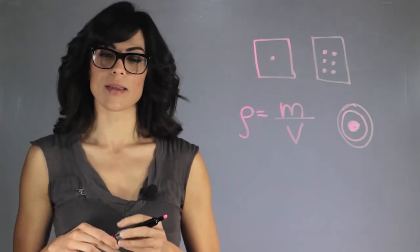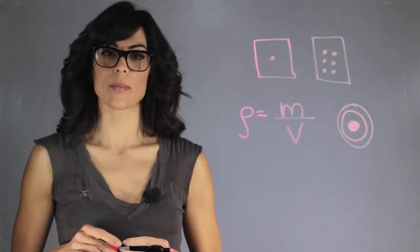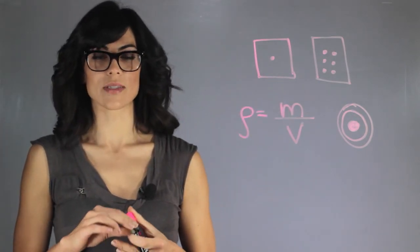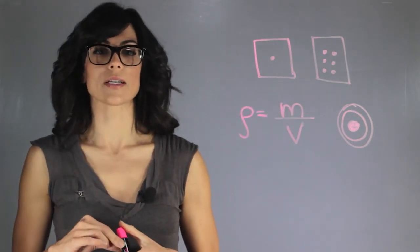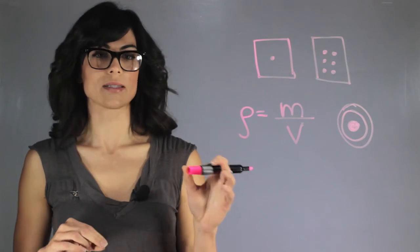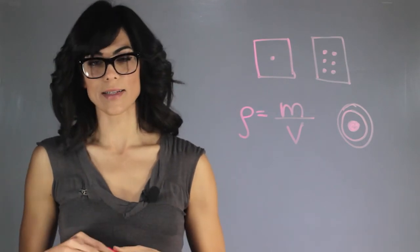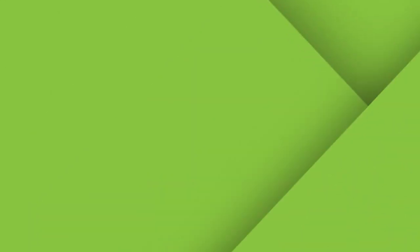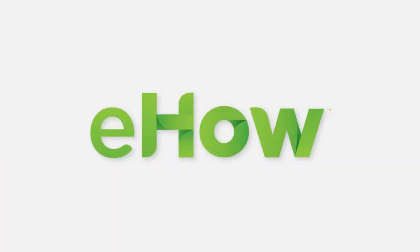My name is Aileen Perez and I'm an astrophysicist, and this is the relationship between mass and volume and the density of a planet. Thank you.